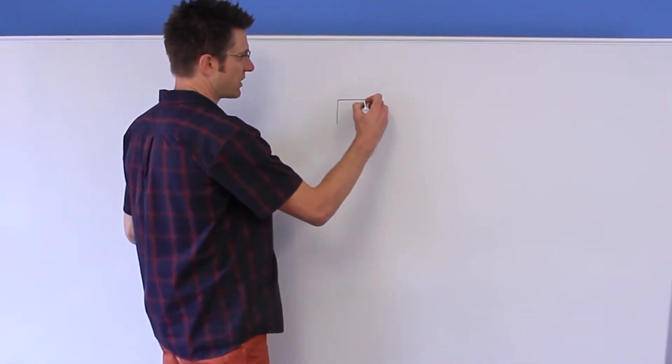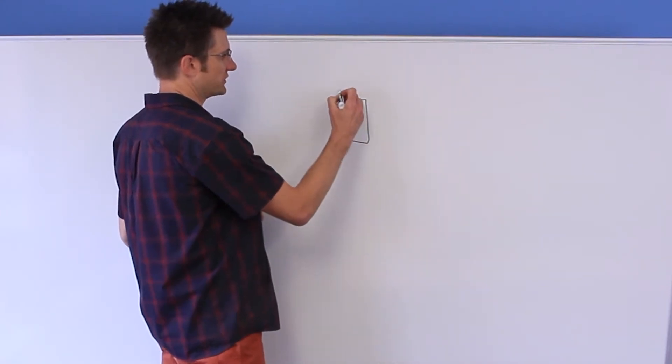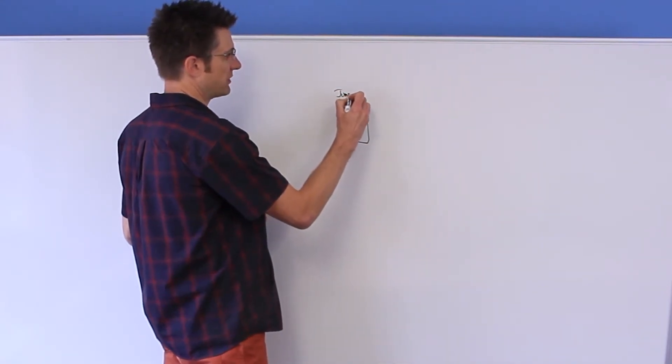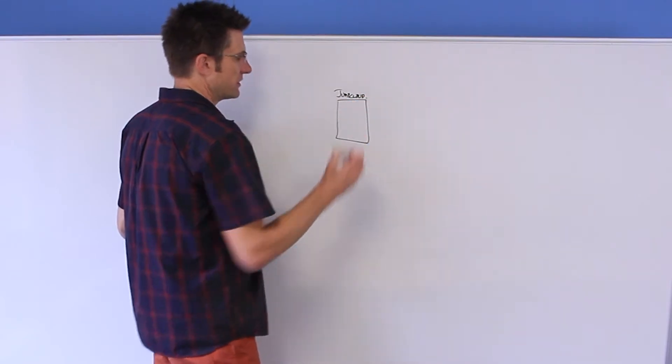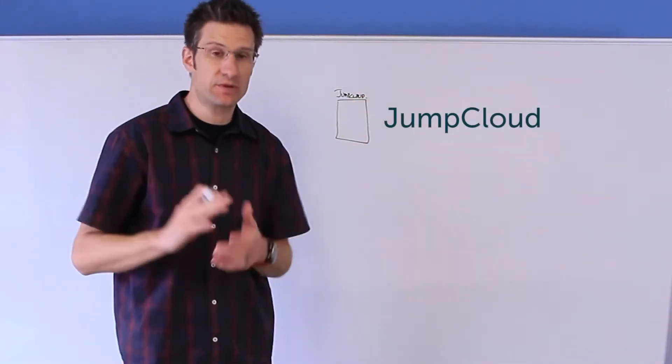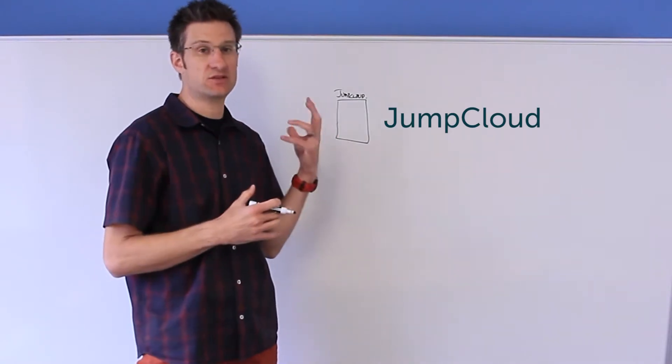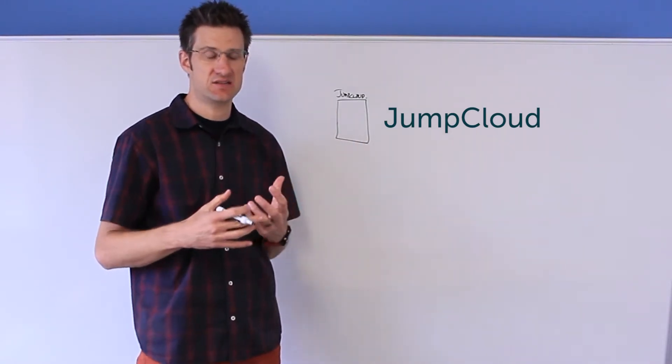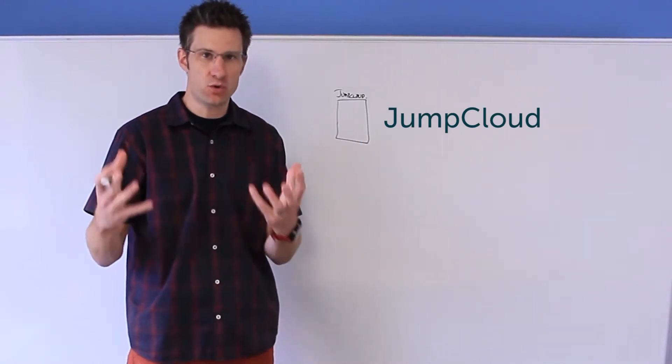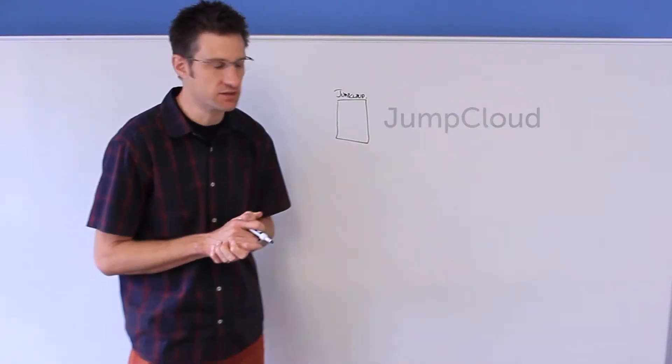First and foremost, let's draw box number one. We're going to call this guy JumpCloud. This is, as you probably use, our core directory service. This is JumpCloud's directory as a service. It is effectively what you are using to control user identity within your organizations.